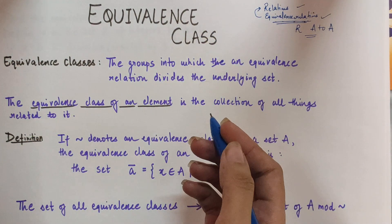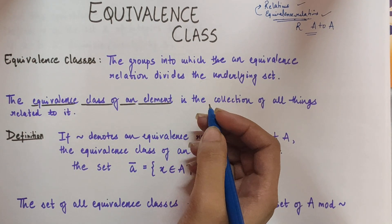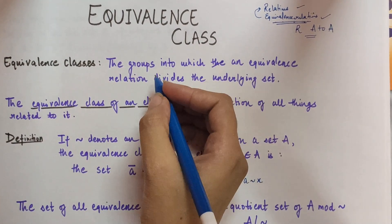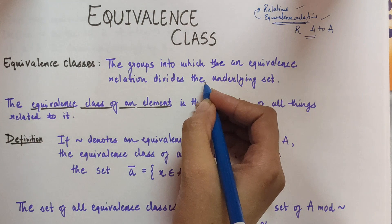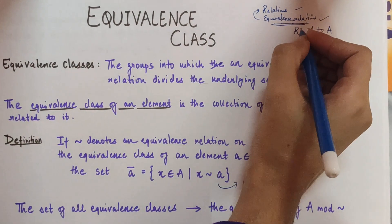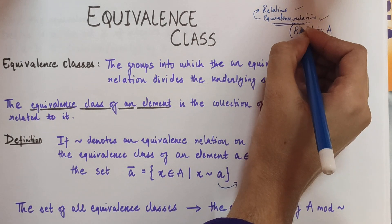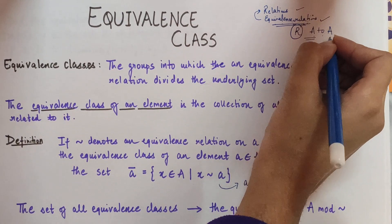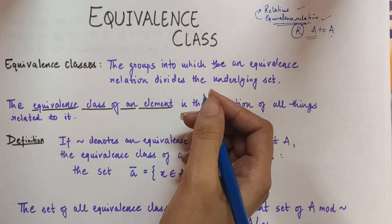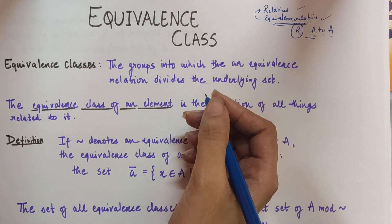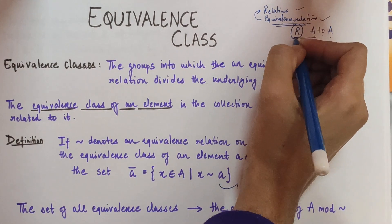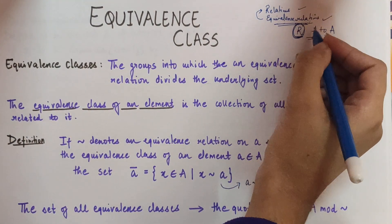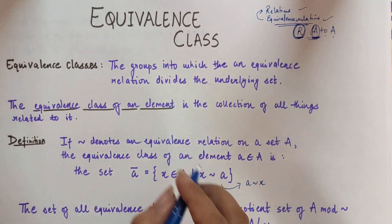First we will discuss the basic definition of equivalence classes in layman's terms. Equivalence classes are basically the groups into which an equivalence relation divides the underlying set. We know that an equivalence relation is a relation on a set A, meaning it is a relation from A to A. So equivalence classes are all those small groups into which this equivalence relation R divides the set A.